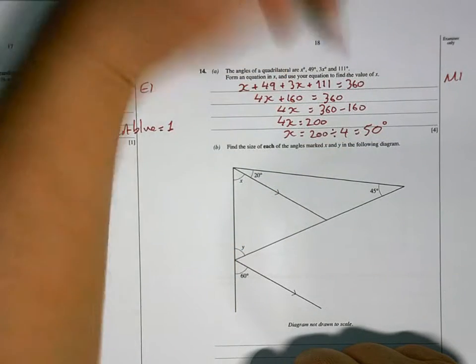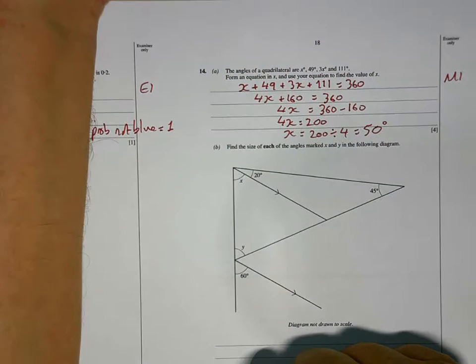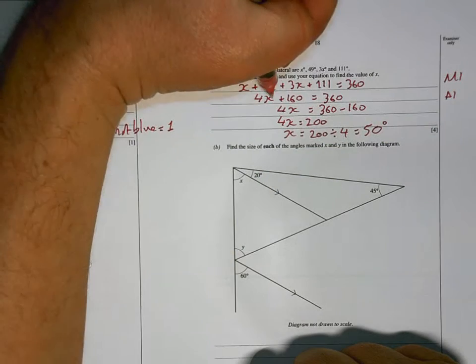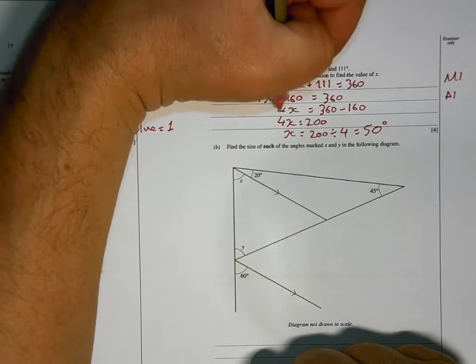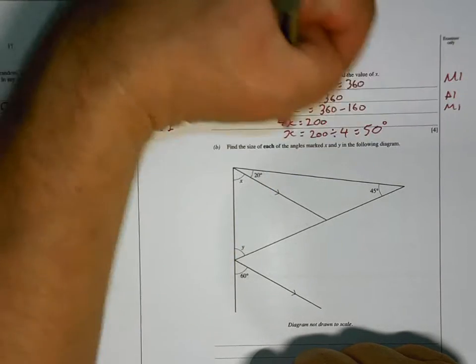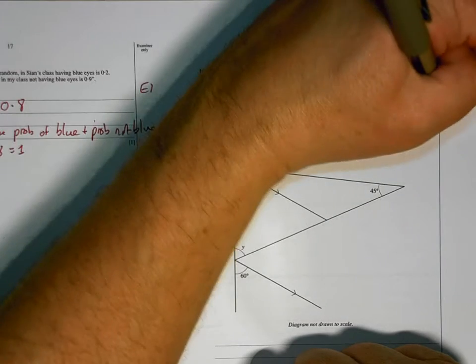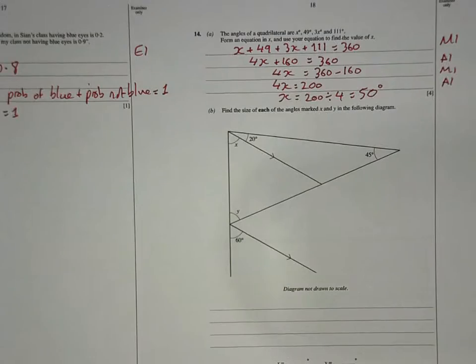One mark for writing down the equation. One mark for simplifying it. One mark for taking it that last step further. And one mark for getting the answer at 50 degrees.